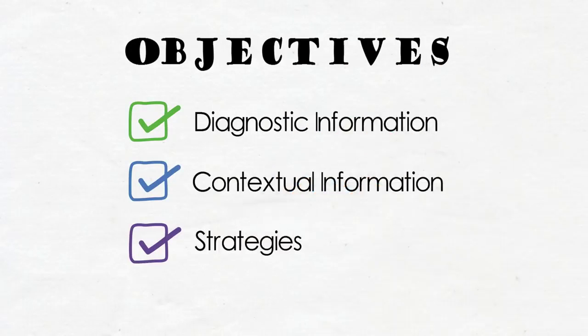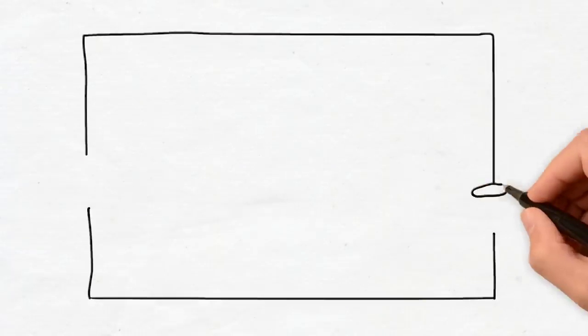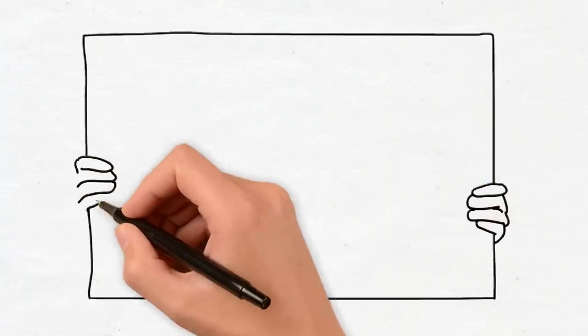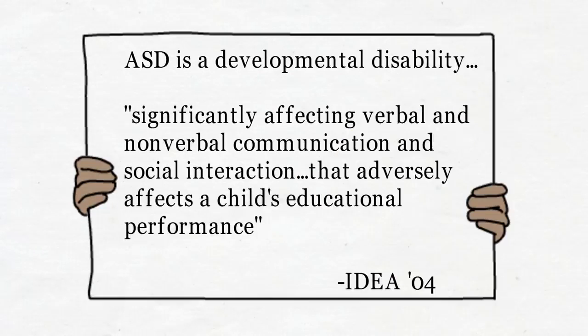Time for our first section, which talks about all of the diagnostic information of ASD. The federal definition of ASD in the Individuals with Disabilities Education Act, or IDEA 04, is stated as a developmental disability significantly affecting verbal and non-verbal communication and social interaction that adversely affects a child's educational performance.